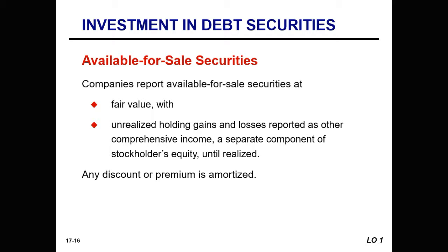When sold, a realized gain or loss is recognized in an amount equal to the difference between the amortized cost and the selling price. By using other comprehensive income — a separate component of stockholders' equity — we normalize and do not impact the income statement until there actually is income associated with the sale of these securities.